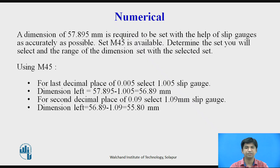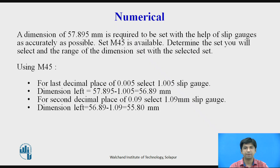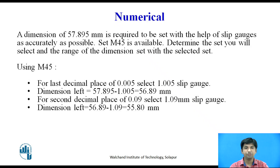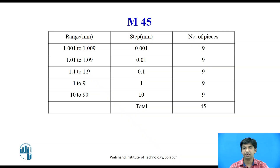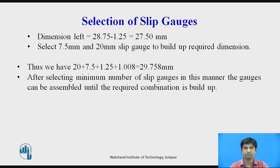Now let us solve the main numerical. A dimension of 57.895 mm is required to be set with the help of slip gauges as accurately as possible. Set M45 is available. Determine the gauges you will select and the range of dimensions achievable with M45. Referring back to the M45 set — it has 45 pieces ranging from 1.001 to 1.009.